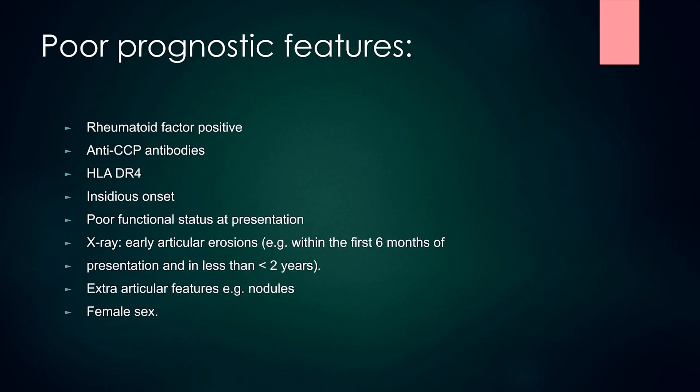Some poor prognostic features of RA are: positive rheumatoid factor, positive anti-CCP antibodies, HLA-DR4, insidious onset, poor functional status at presentation, early articular erosions on X-ray, extra-articular features like nodules and female sex.